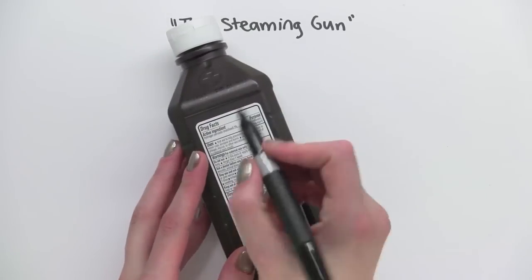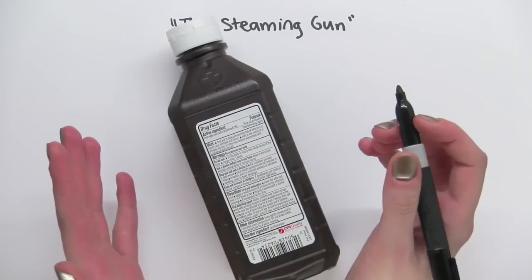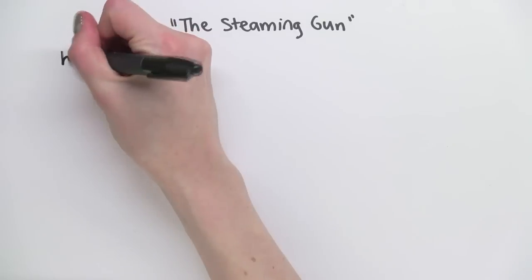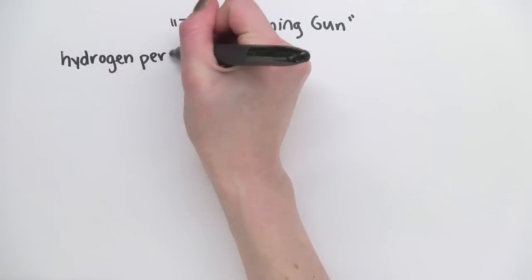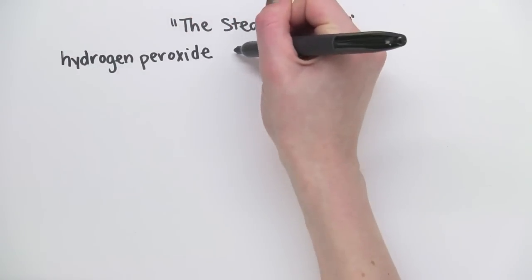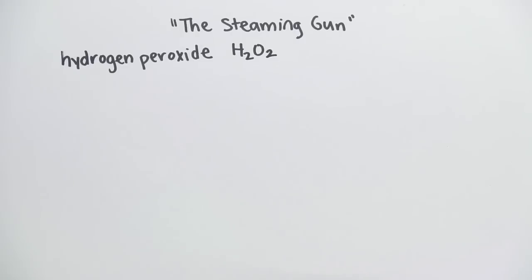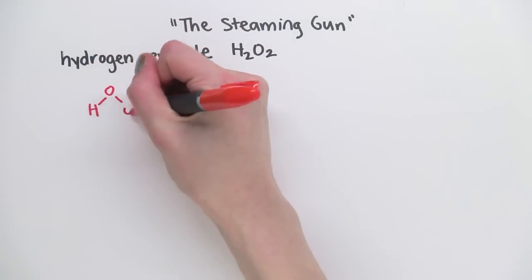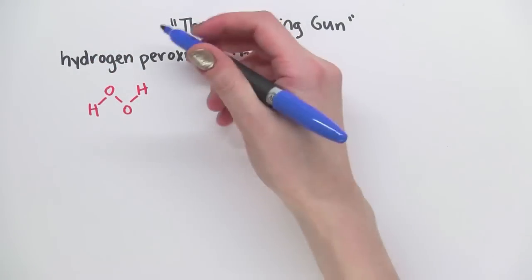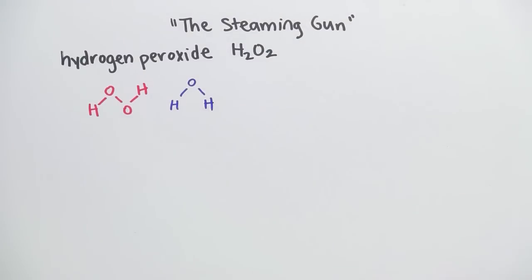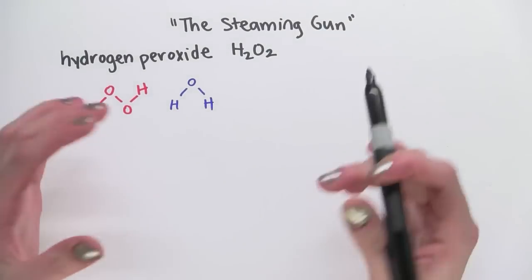The solution that you get at the drugstore is usually 3%. So it's called hydrogen peroxide and its chemical formula is H2O2. So the atoms are arranged like this. It sort of looks like water, but the extra oxygen makes the molecule more reactive.